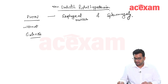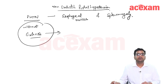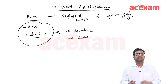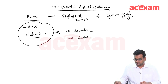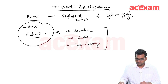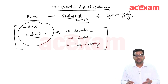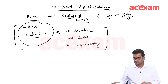Since there is no cirrhosis in non-cirrhotic portal hypertension, there is no jaundice, no ascites, and no encephalopathy. However, esophageal varices and splenomegaly are present, and there is definitely a possibility of bleeding esophageal varices.